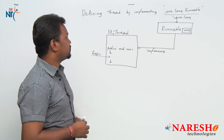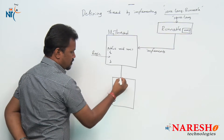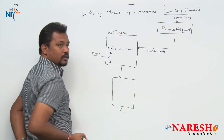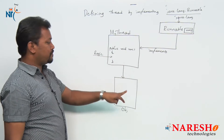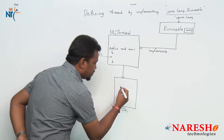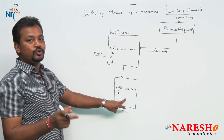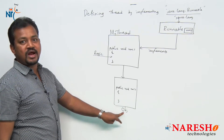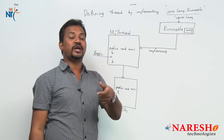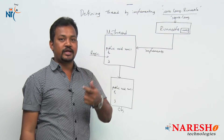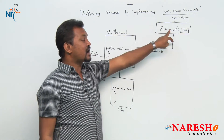Now I am creating an object for this user-defined class. Whenever I create the object, the run method is bound to that object and is available. Now if I use obj.run, it becomes a normal program execution — but I want to execute this program as a threading program. Whenever I want to execute it like a threading program, I must take the support of the start method. But the start method is not available within the Runnable interface.